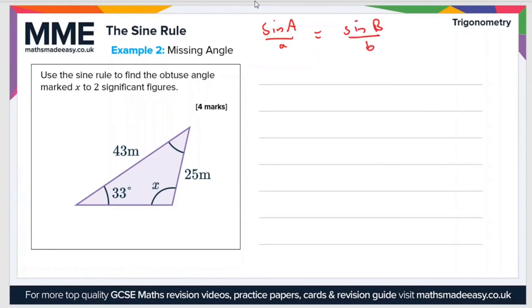In this case, let's say that this angle X is A, and therefore this side is A, and then this angle here will be B, and then this side here is B.